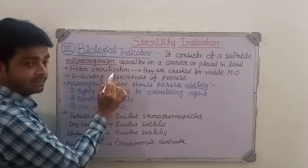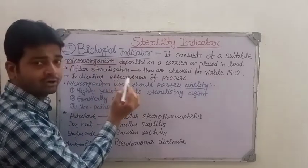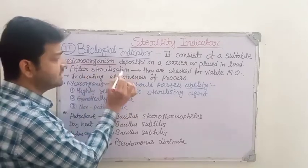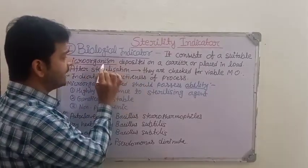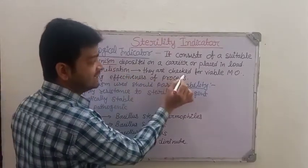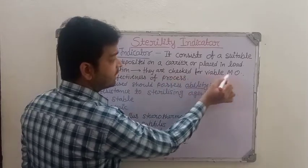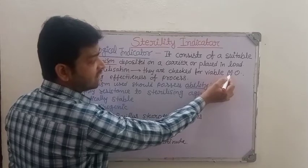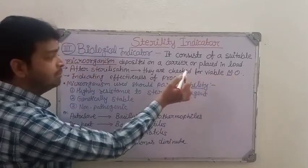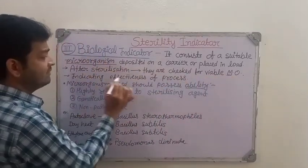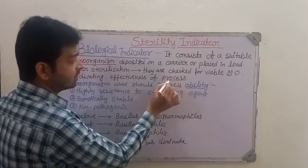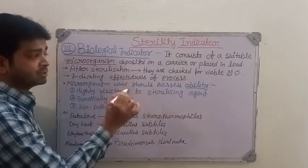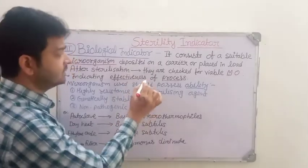After the sterilization, whenever the sterilization is complete — whether hot air, autoclave, dry heat, or moist heat, whatever you are using — these microorganisms are collected and checked for viable microorganisms, which is going to show you the effectiveness of the sterilization, indicating the effectiveness of the process.